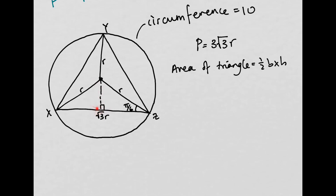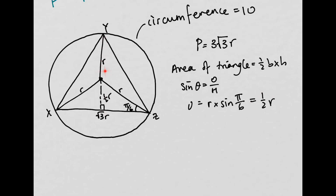We can do something similar to find this length. This is now the opposite edge, so we use sine: sin θ = opposite/hypotenuse. Our θ is π/6 and the hypotenuse is r, so the height of the right-angled triangle is r × sin(π/6) = r/2. The total height is therefore r + r/2 = 3r/2. So the area is (1/2) × √3·r × (3r/2) = 3√3·r²/4.